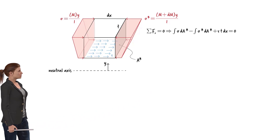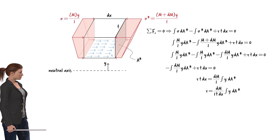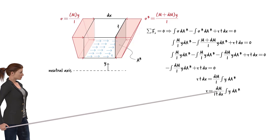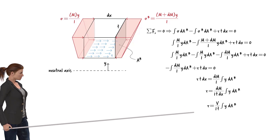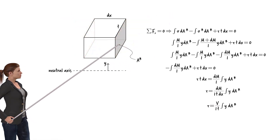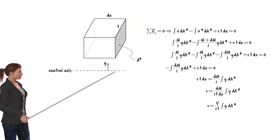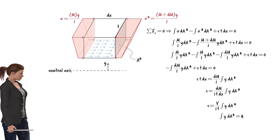This equation simplifies, and solving for tau we get an expression. Since dm/dx represents the shear force V, we can rewrite this equation accordingly. Note that the integral expression represents the moment of area A* about the beam's neutral axis. Let's refer to it as Q. Therefore, we can write the shear stress along the cut plane as τ = VQ / (It).